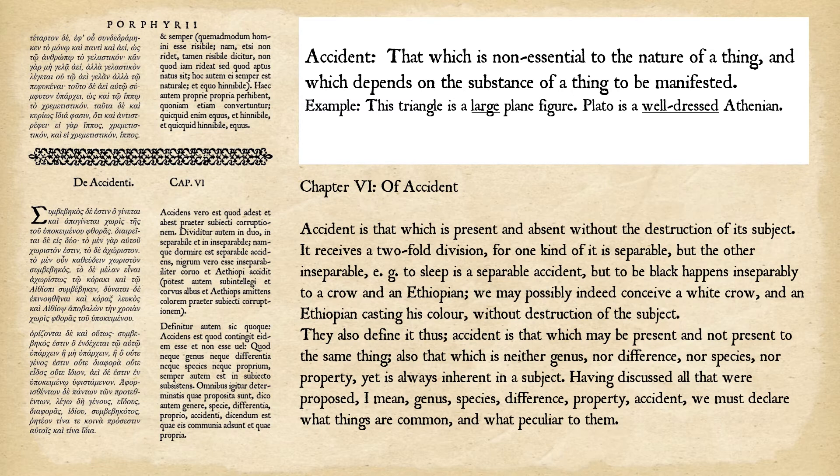They also define accident thus: accident is that which may be present and not present to the same thing. Also, that which is neither genus, nor difference, nor species, nor property, yet is always inherent in a subject. Having discussed genus, species, difference, property, and accident, we must declare what things are common and what peculiar to them.